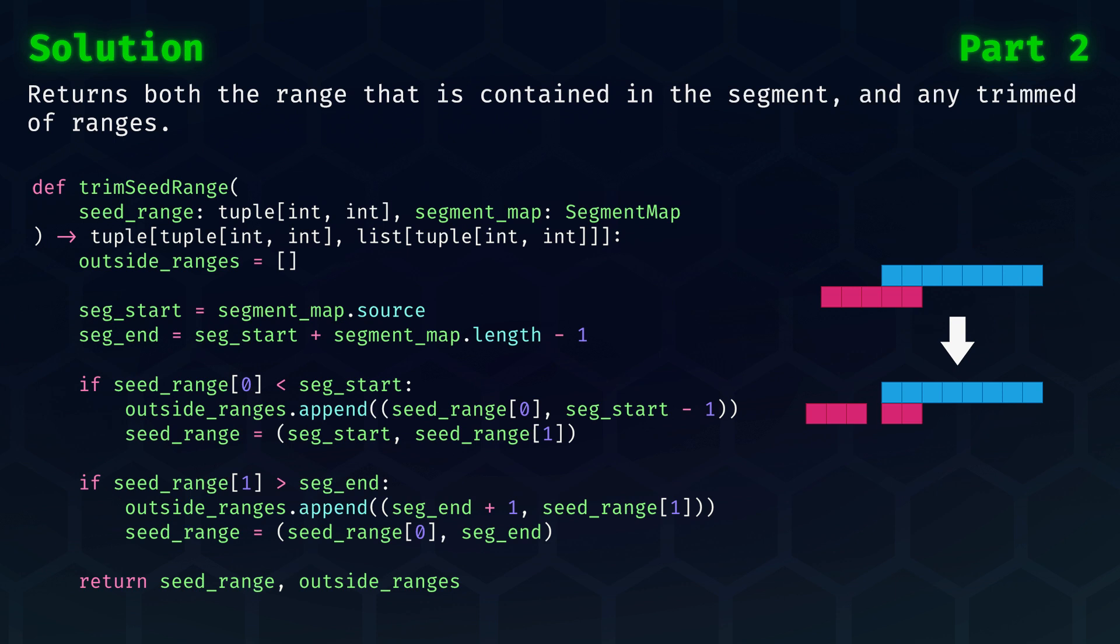In code, I went for the TrimSeedRange function, which gives back a trimmed seed range, as well as the outside ranges, which represent the trimmed parts. Feel free to pause the video if you want to look at this in detail.